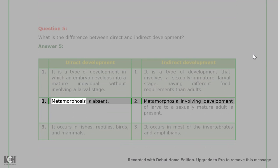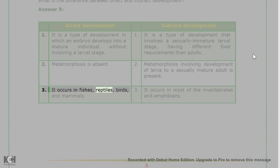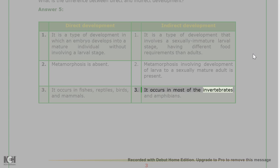2. Metamorphosis is absent. 2. Metamorphosis involving development of larvae to a sexually mature adult is present. 3. It occurs in fishes, reptiles, birds, and mammals. 3. It occurs in most of the invertebrates and amphibians.